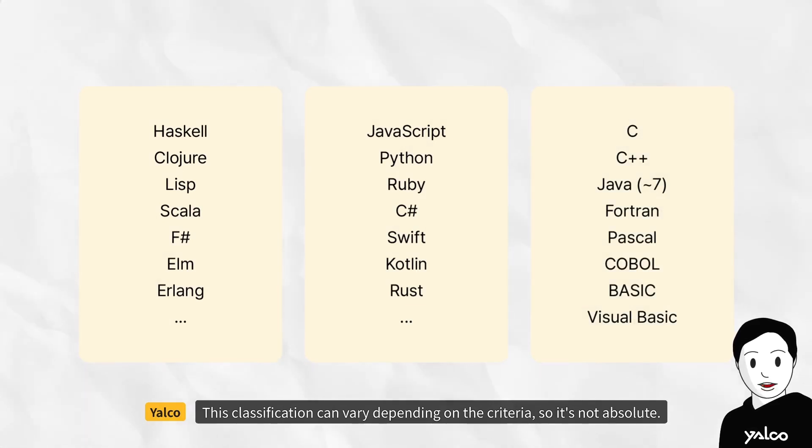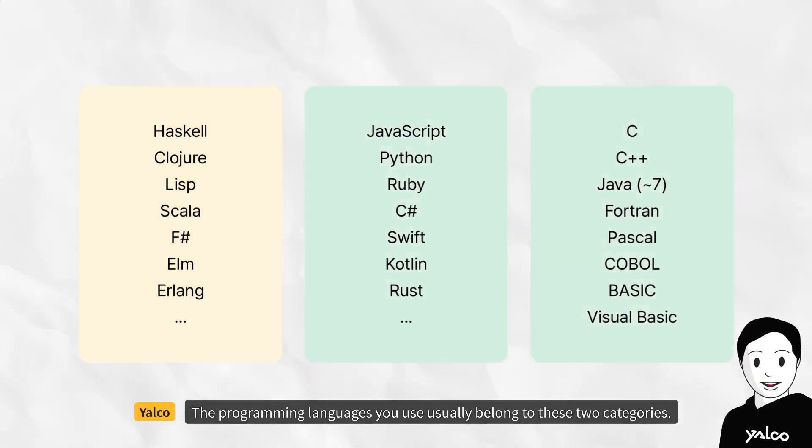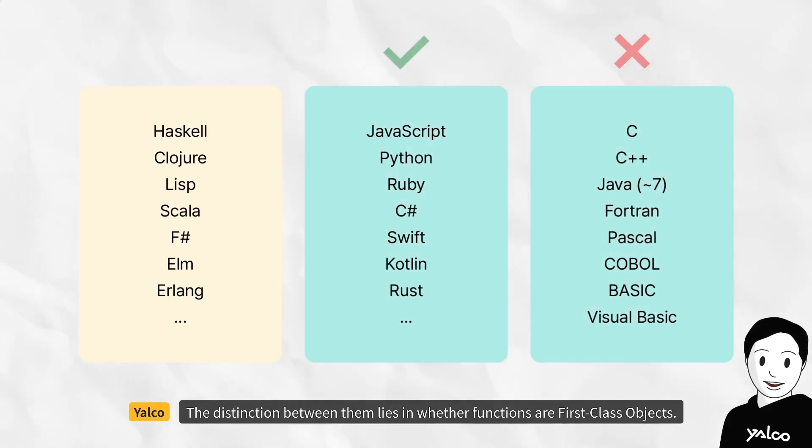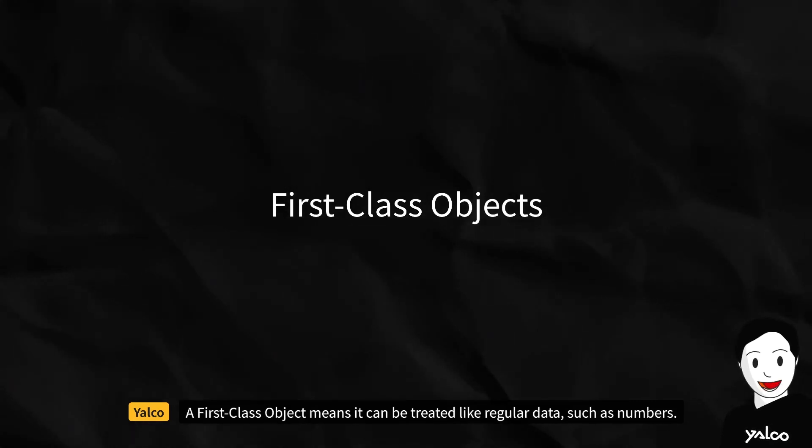This classification can vary depending on the criteria, so it's not absolute. I'll talk more about languages dedicated to functional programming when we cover advanced topics later on. The programming languages you use usually belong to these two categories. The distinction between them lies in where the functions are first-class objects. A first-class object means it can be treated like regular data, such as numbers.